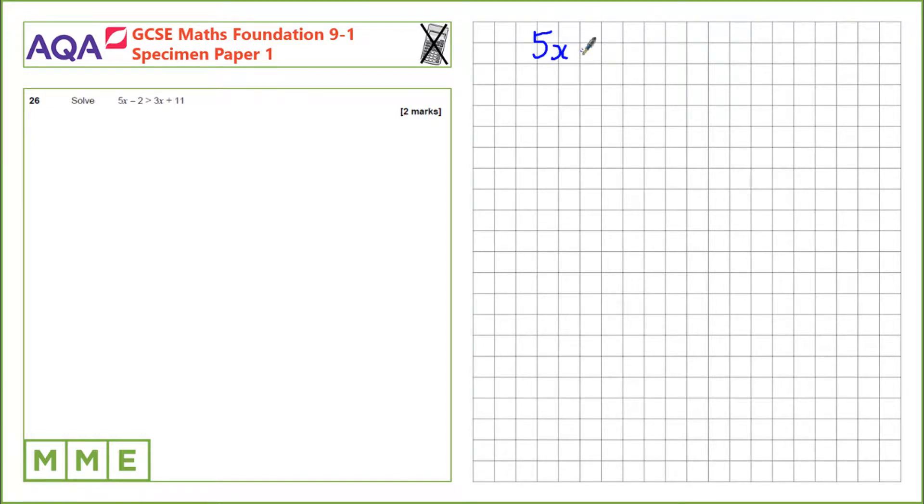So, the first step we need to do is to move over this plus 2. To get rid of this negative 2, we need to add 2 to both sides. 5x take away 2, if we add 2 to this side, we're going to get 5x. And 3x plus 11, if we add 2 to this side, we'll get plus 13. 11 plus 2.